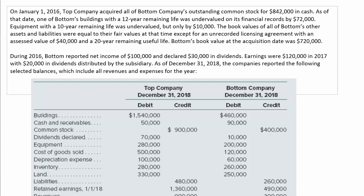On that date, one of Bottom's buildings with a 12-year remaining life was undervalued on its financial records by $72,000. Equipment with a 10-year remaining life was undervalued by $10,000. The book values of all of Bottom's other assets and liabilities were equal to their fair values, except for an unrecorded licensing agreement with an assessed value of $40,000 and a 20-year remaining useful life.